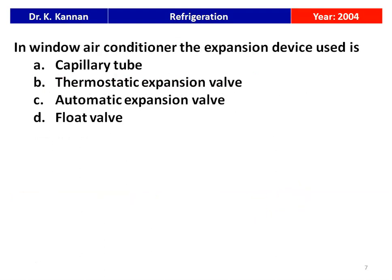In a window air conditioner, the expansion device used is a capillary tube, thermostatic expansion valve, automatic expansion valve, or float valve. The correct answer is capillary tube. This question is from the 2004 question paper.